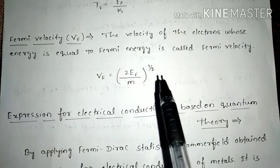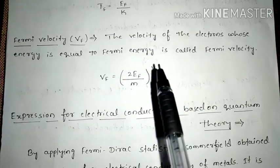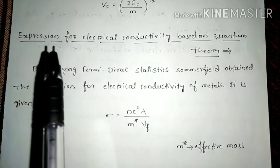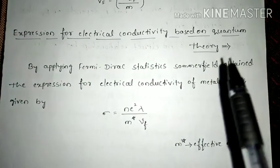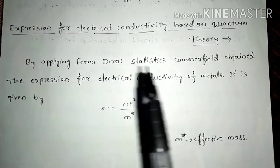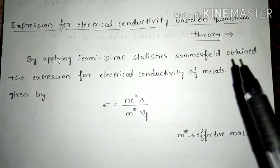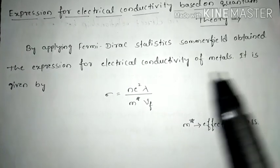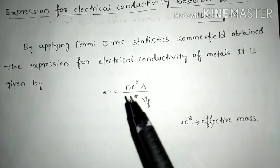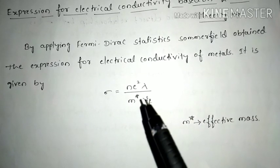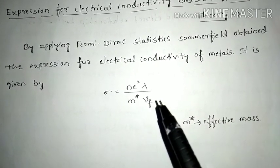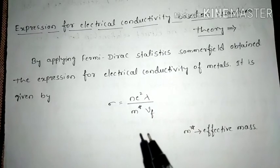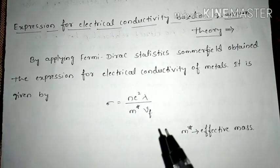Using the quantum free electron theory and the help of Fermi energy, we are able to find the expression for electrical conductivity. By applying Fermi statistics, Fermi was able to obtain the expression: σ = Ne²λ / (M* · Vf), where M* is known as effective mass.